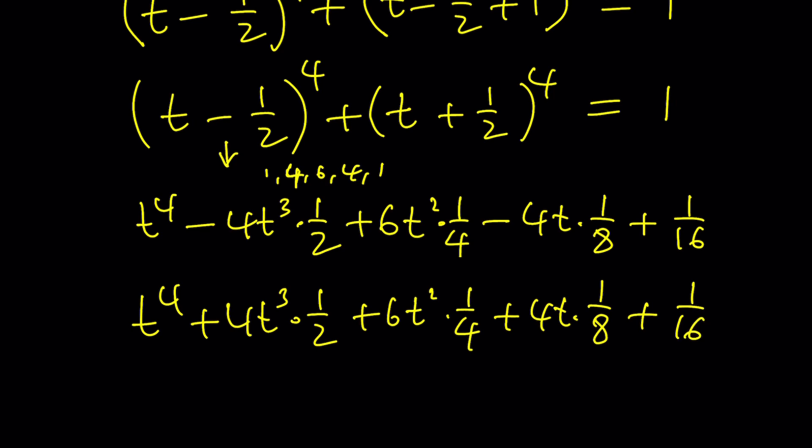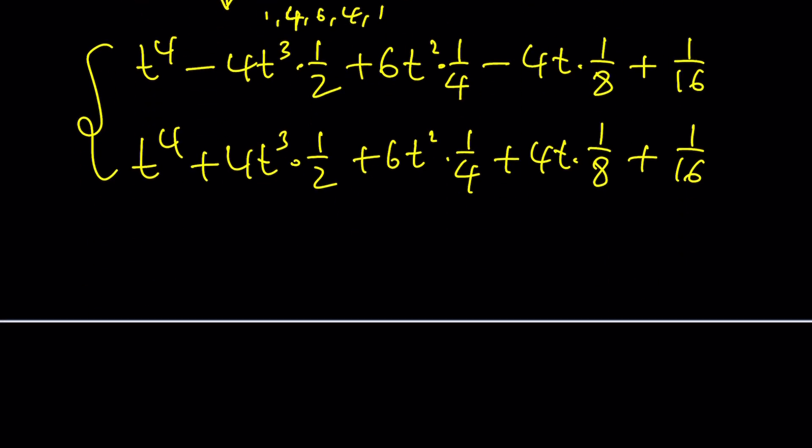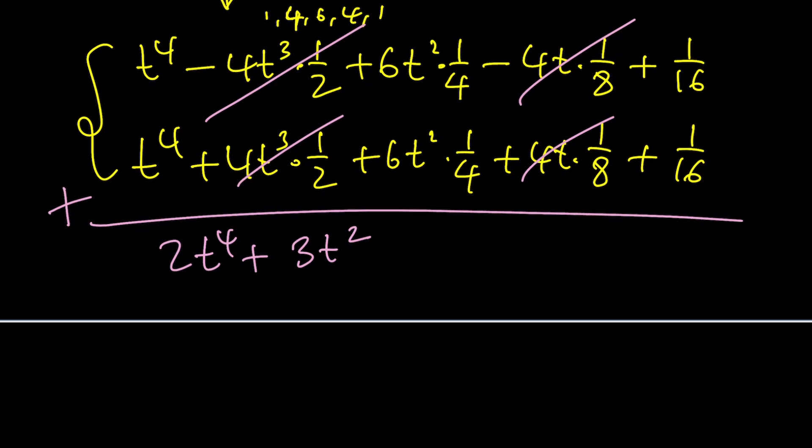Now we have these two expressions from here. We're going to go ahead and add them up. But when we do, these terms are going to cancel. These terms are going to cancel. We're going to end up with two t to the fourth plus, this is three halves by the way, so that's going to give us three t squared. And these two are going to give me two over 16 or one over eight equals zero.